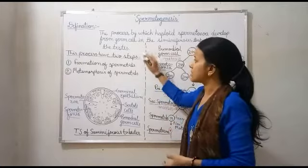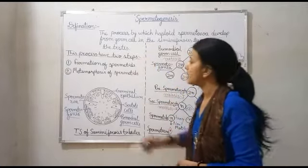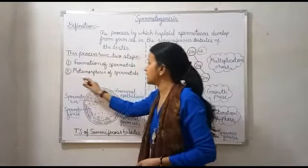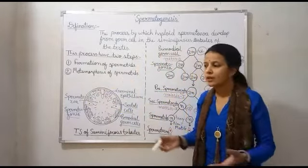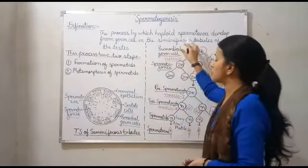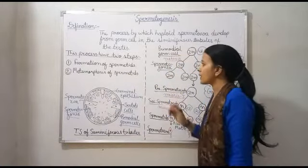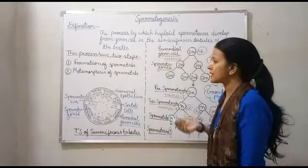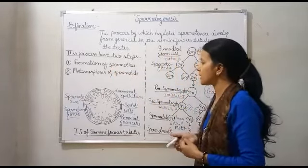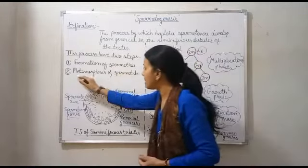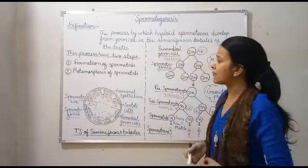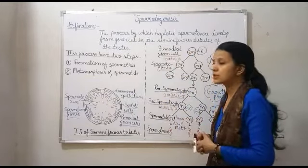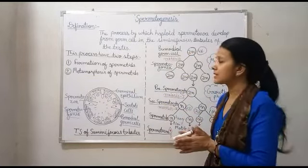इस process के two steps हैं। Number one is formation of spermatids, and another one is metamorphosis of spermatids. यह clear है कि directly spermatozoa form नहीं होती, पहले spermatids form होते हैं, जो कि इसकी pre-stage है। Spermatogenesis के अंदर further metamorphosis होता है।